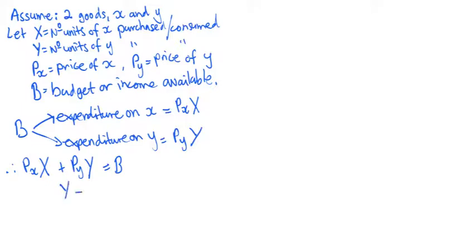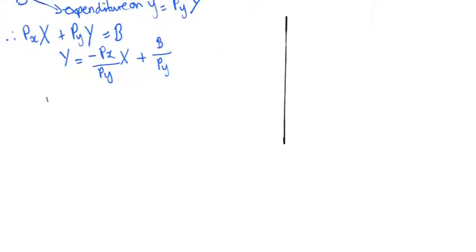If we rearrange this and solve for Y, we get Y is equal to negative Px times uppercase X all over Py plus B divided by Py. We should be able to see from high school economics that this equation resembles Y equals mx plus b.